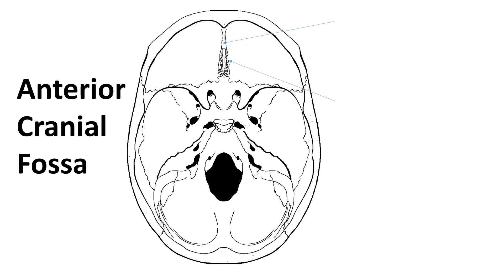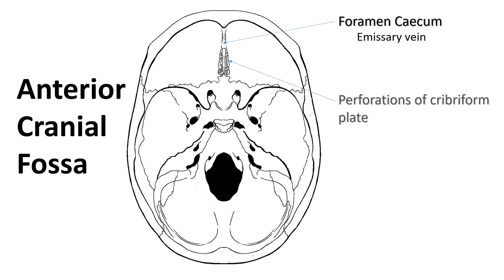In the anterior cranial fossa, we can find the foramen cecum, which transmits the emissary vein, and perforations of the cribriform plate, which transmit the olfactory nerves.